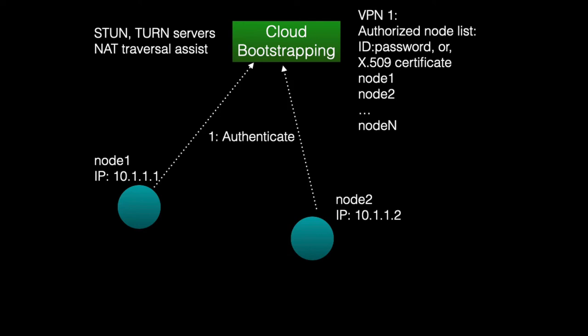Here we have two nodes — node 1 and node 2 — with shown private IP addresses. They start the process of joining the network by authenticating with a bootstrapping service.